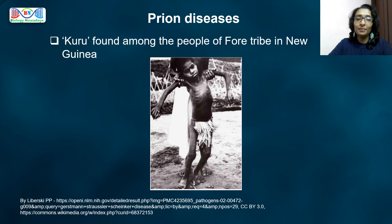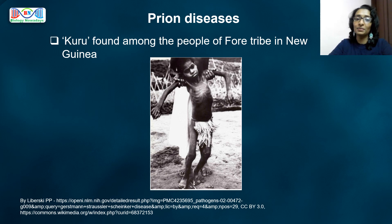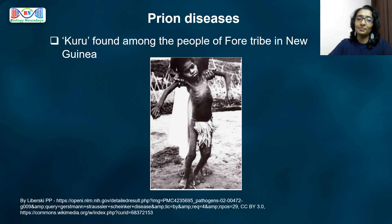The people of the Fore tribe practiced a form of cannibalism in which they ate the cooked brains of dead people. This strange activity was a part of the funeral ritual — they believed it would help to free the spirit of the dead. But prions cannot be destroyed even by cooking. So, when these people ate the prion-infected brain of a dead person, they would also get infected. That's how kuru spread among the Fore people of New Guinea.